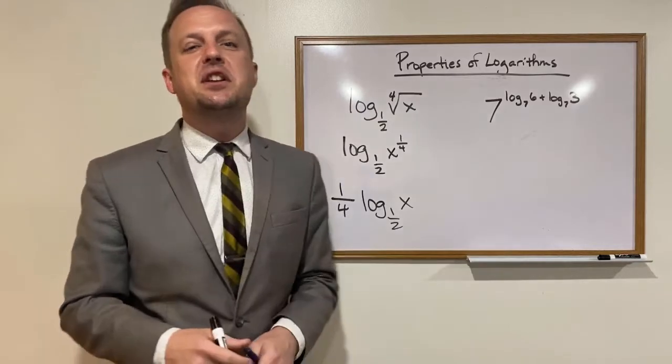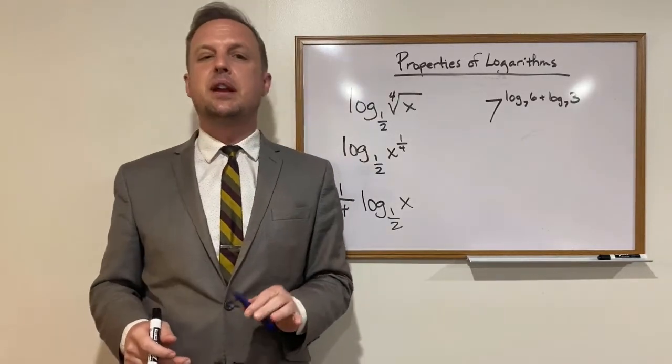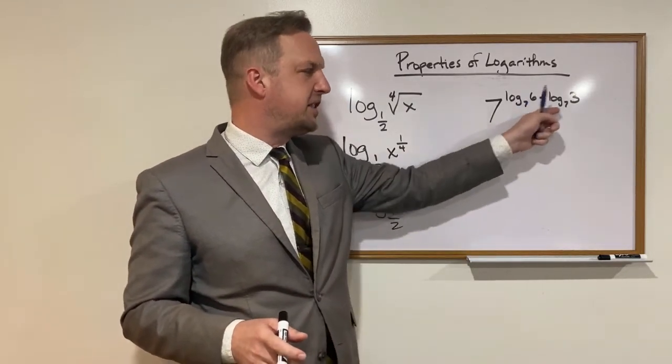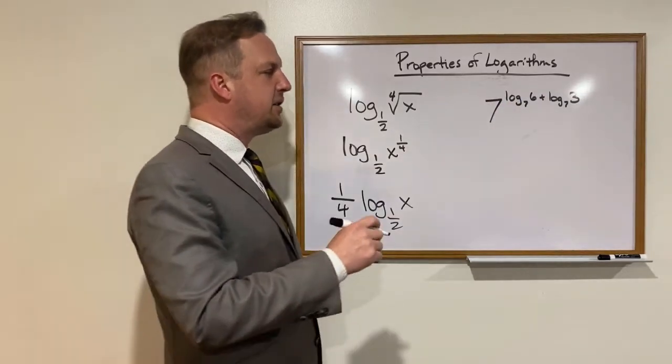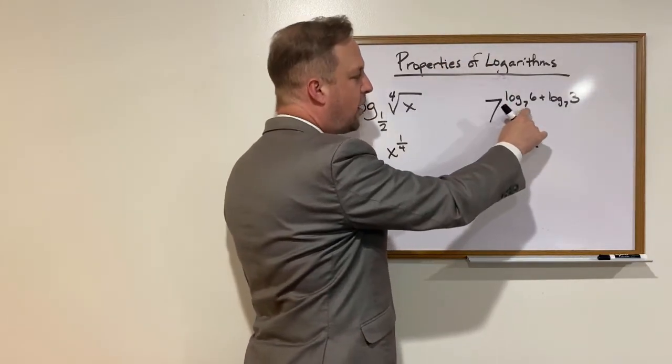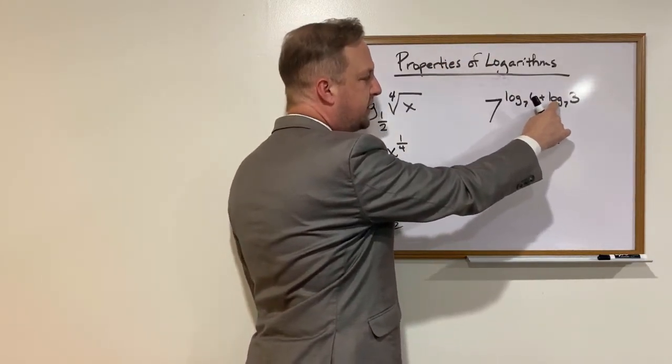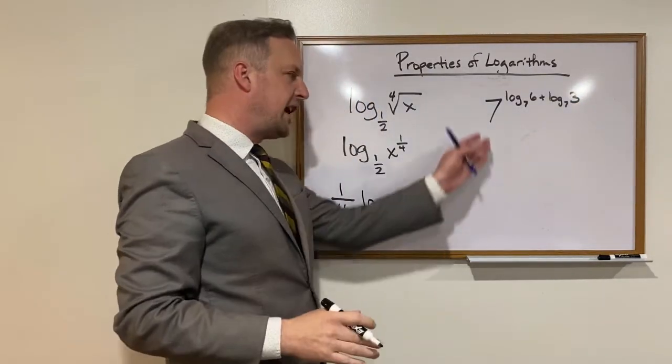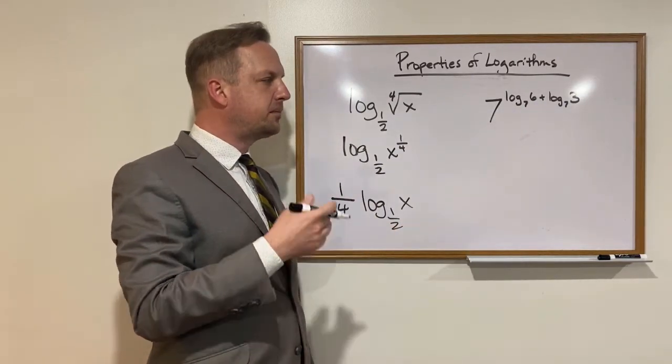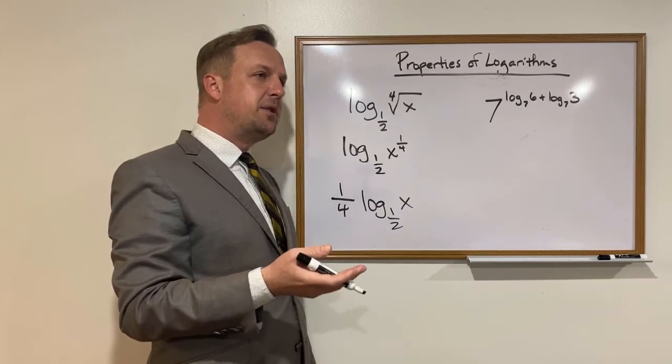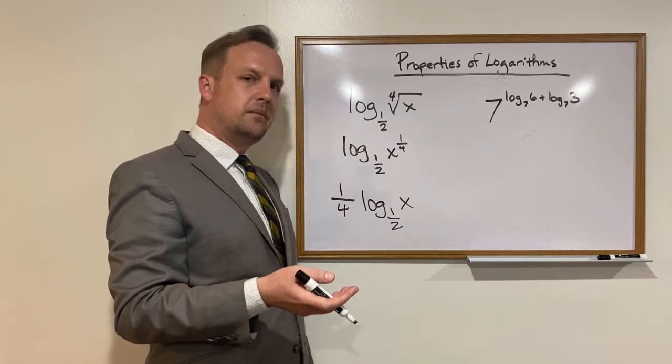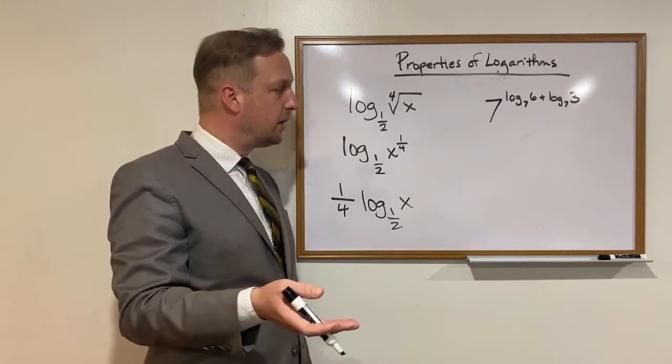Now this one is going to use an old property that we just touched on a little bit called the cancellation property at the end. So how can we simplify this using properties? So we have 7 raised to the log base 7 of 6 plus the log base 7 of 3. Now forget about the 7 for a second. Just look at this exponent up here, which is the sum of these two logs. Think to yourself, based on the three powers, which one might we be able to work with there?